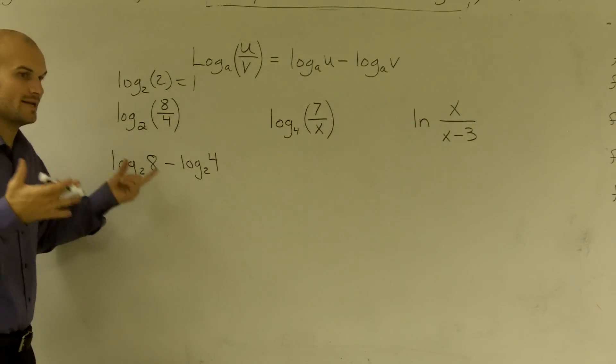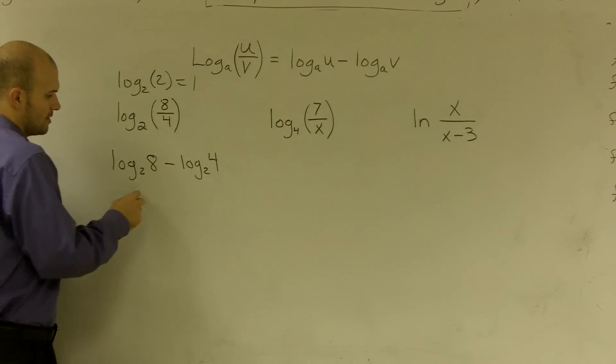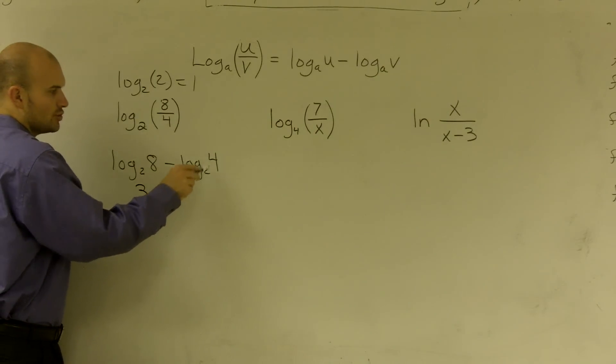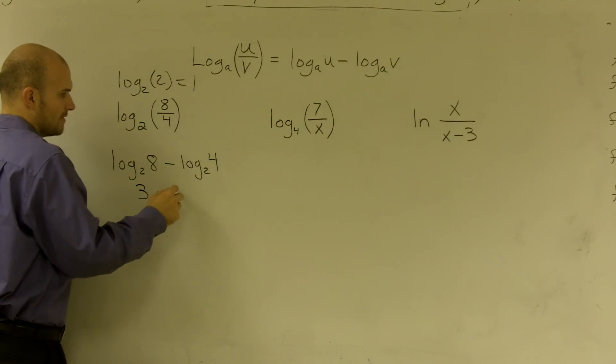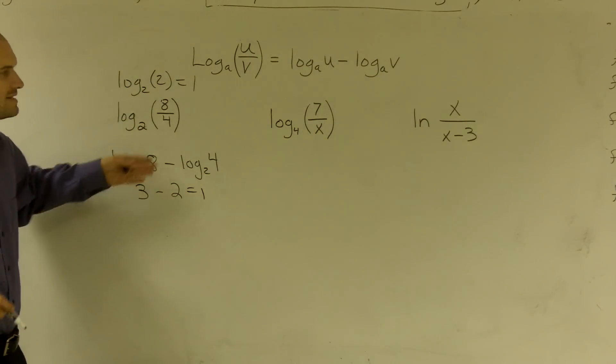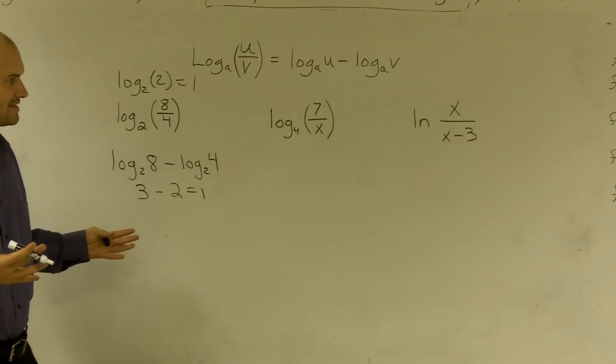It's saying 2 raised to what number equals 8? That's 3 minus 2 raised to what number gives you 4? That number is 2. 3 minus 2 equals 1. So therefore, that shows you we can separate it, and you're still going to have the same answer.